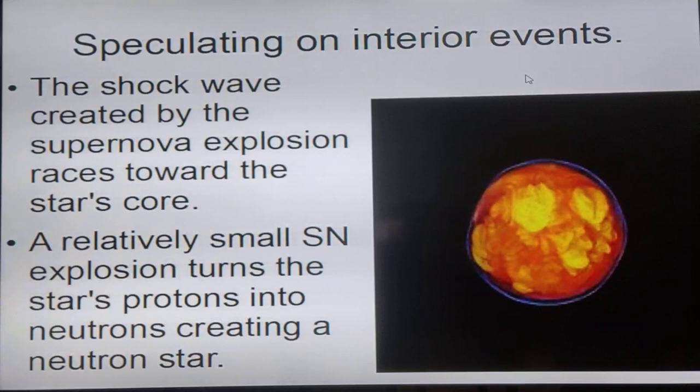The star's protons lose the positron, the positive electron and create neutrons. So what's left behind is a neutron star.